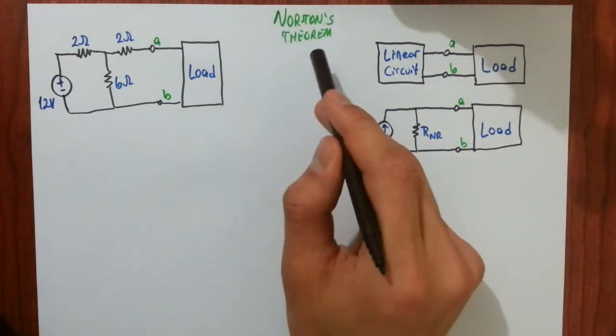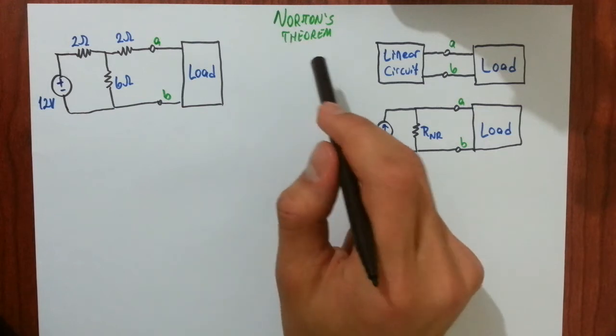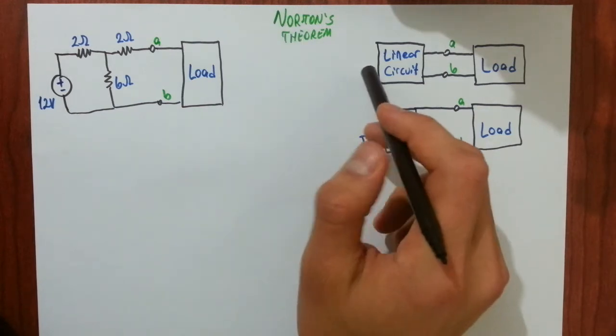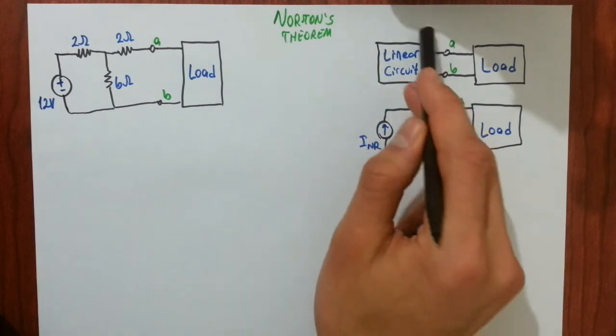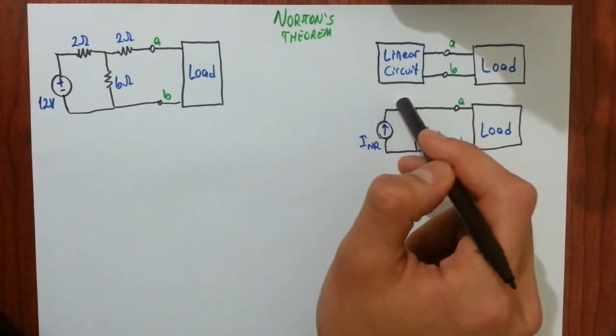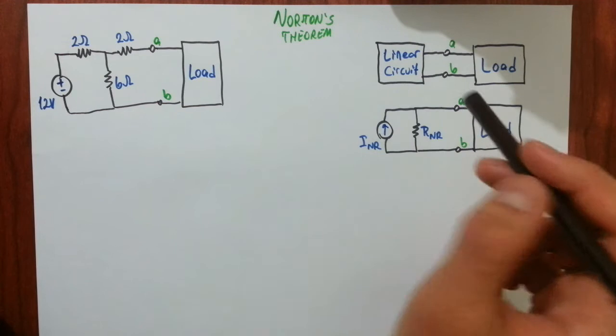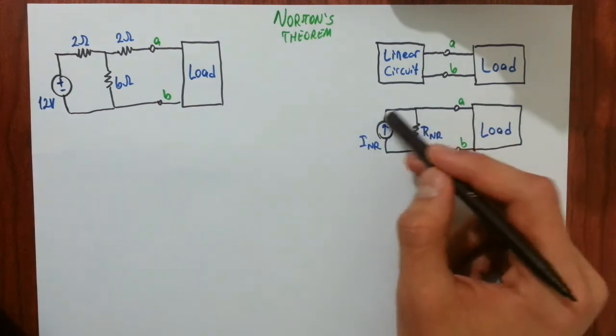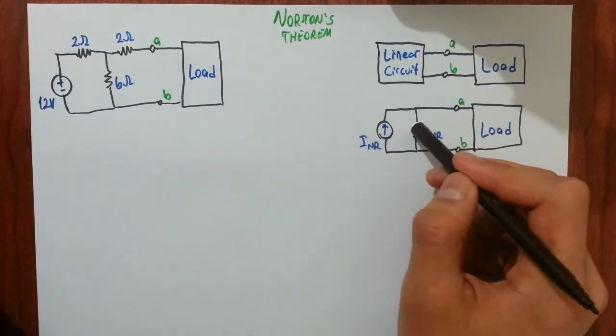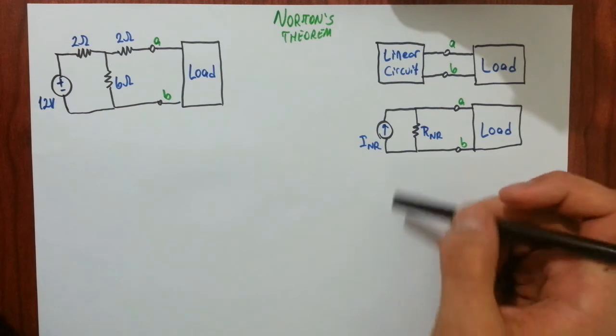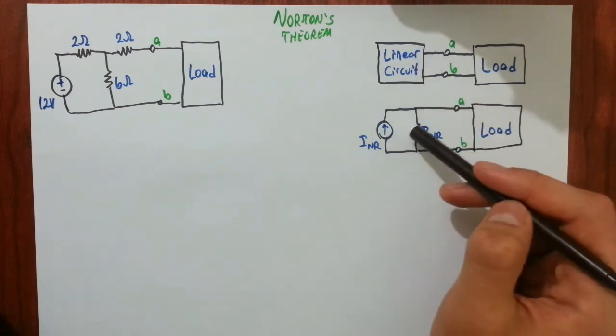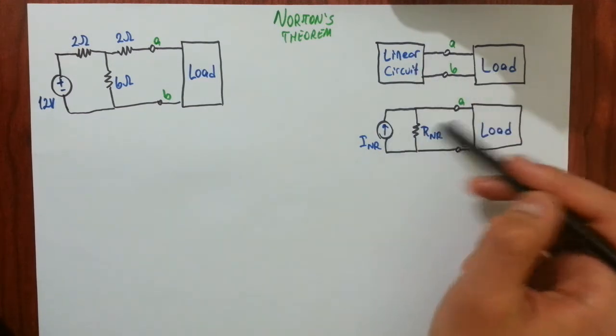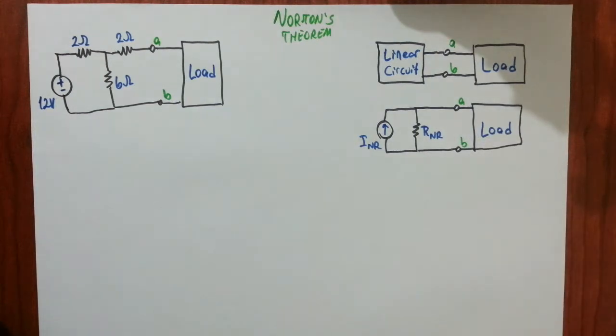And to deal with this problem, Norton has developed a theorem called Norton's theorem and according to this one you can replace the part of your circuit which remains always the same with an equivalent and a simpler circuit that consists of an independent current source and a resistor that are in parallel with each other. And this replacement does not affect the output of your load and that is the point of Norton's theorem.